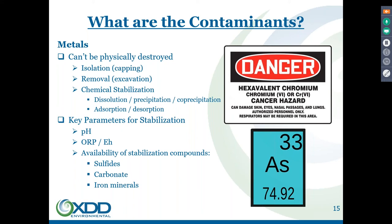For a lot of metals, metal sulfides are a very low solubility compound that you can form. That's why calcium polysulfide is a popular reagent to tie up heavy metals — because the metal sulfides formed, for a good number of metals, have pretty low solubility.